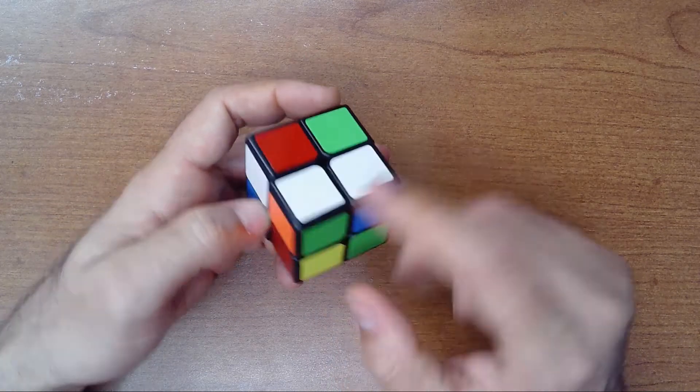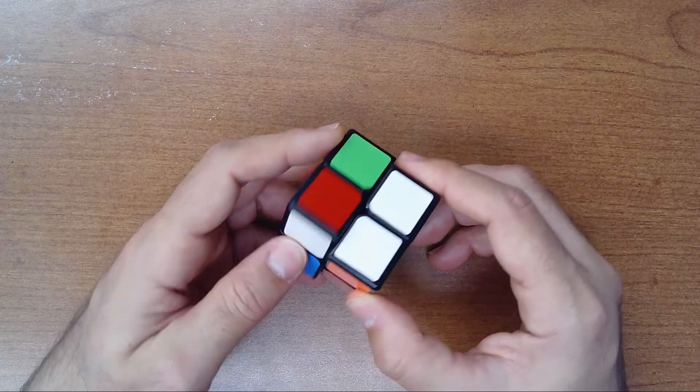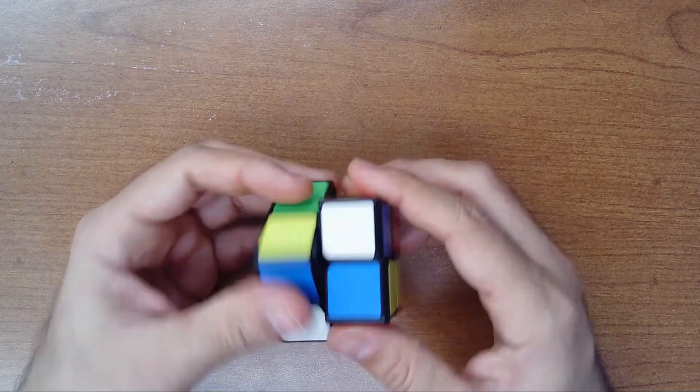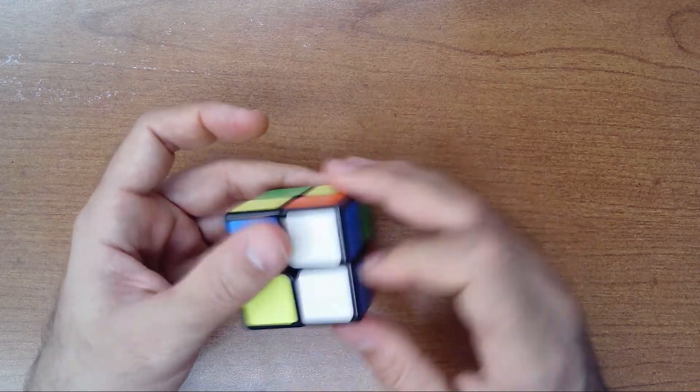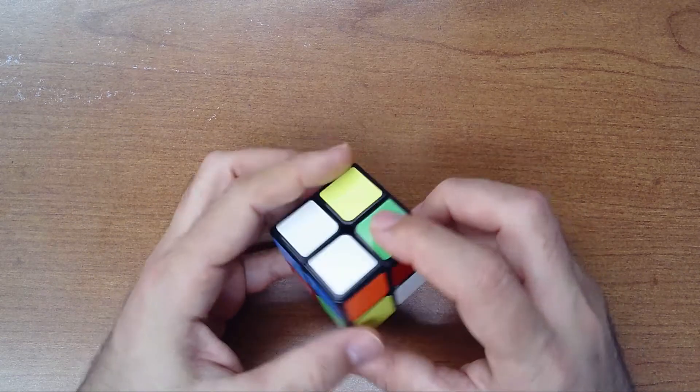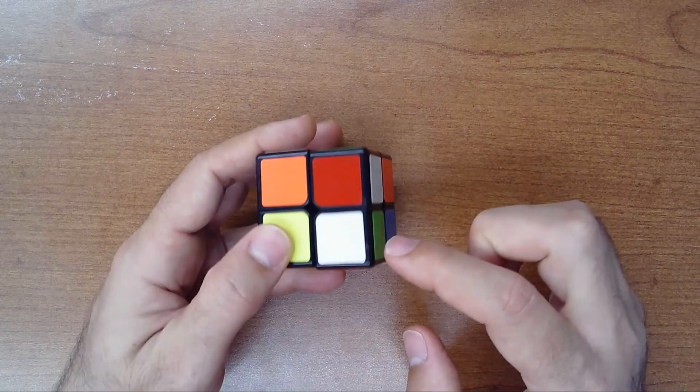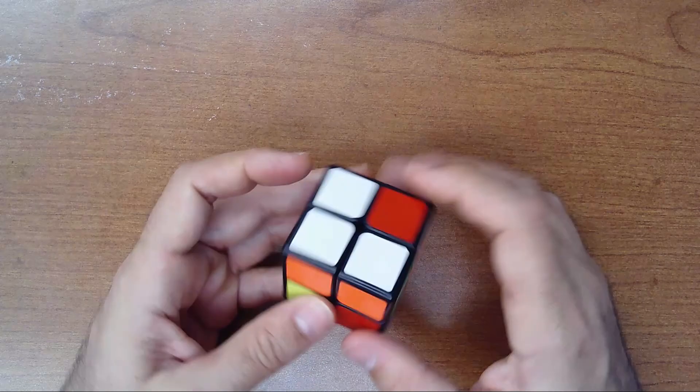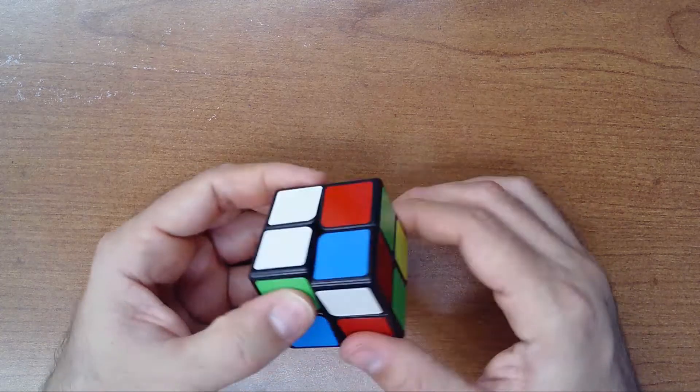I'll do this here. Okay, so I have white and the blues here. Now let's find the white-orange. This one, it is okay, here it is done. Then here.